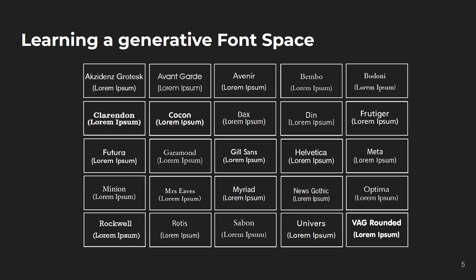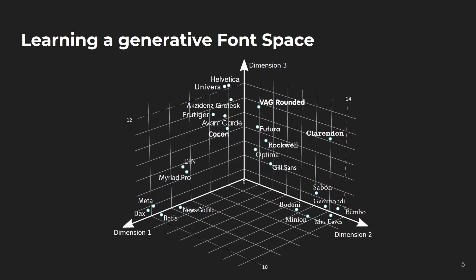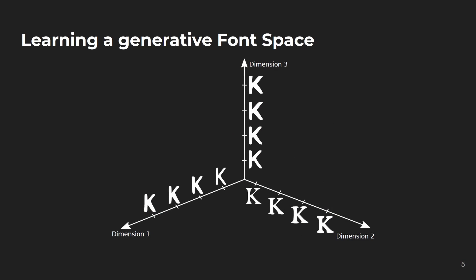Specifically, we use non-negative matrix factorization (NMF) to learn a font space based on 25 classical and popular fonts. Through this representation, it is now possible to synthesize new fonts as a linear combination of the learned font basis vectors. Accordingly, a font can be represented by a point in this learned embedding space. Inspecting the letter renderings suggests that the first and third dimensions are related to scaling of letters in the vertical or horizontal directions, whereas the second dimension is related to the presence and strength of serifs.